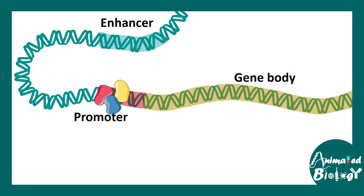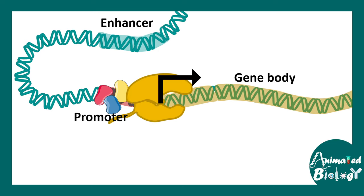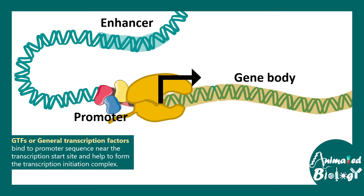Where does a transcription factor bind? There are a specific set of transcription factors that bind to the promoter region of a gene and help RNA polymerase to be recruited and initiate the transcription process. These are known as general transcription factors. Their binding to the promoter is important for RNA polymerase recruitment, so they are the bare minimum to start transcription.